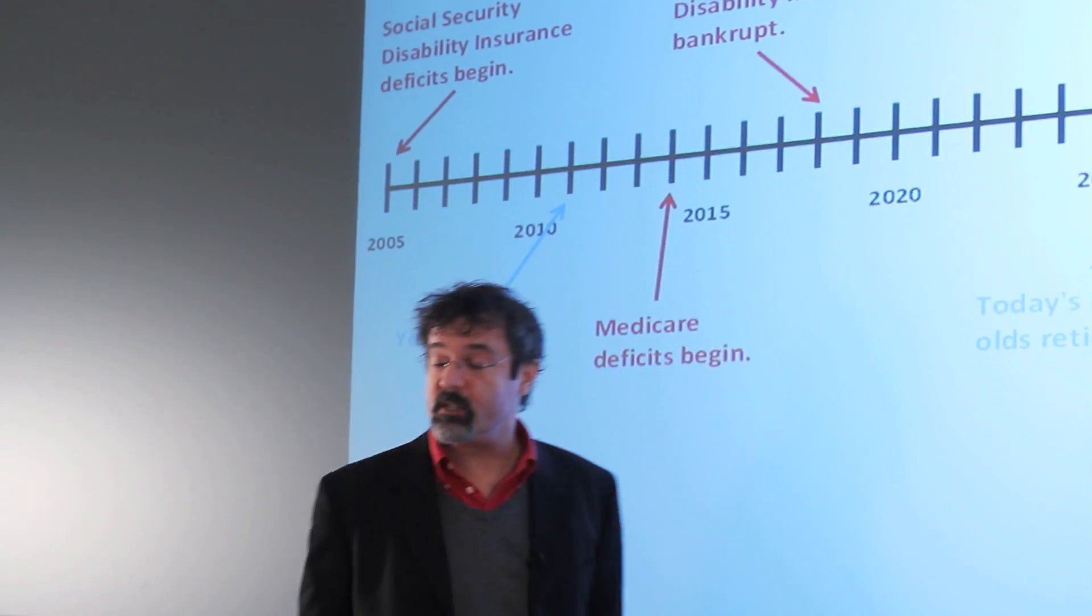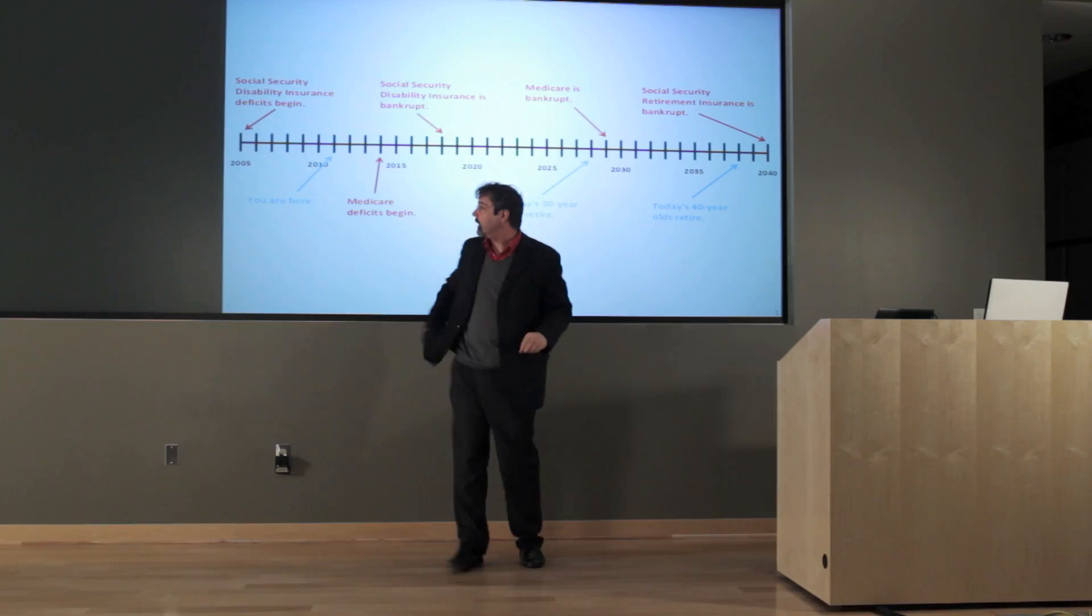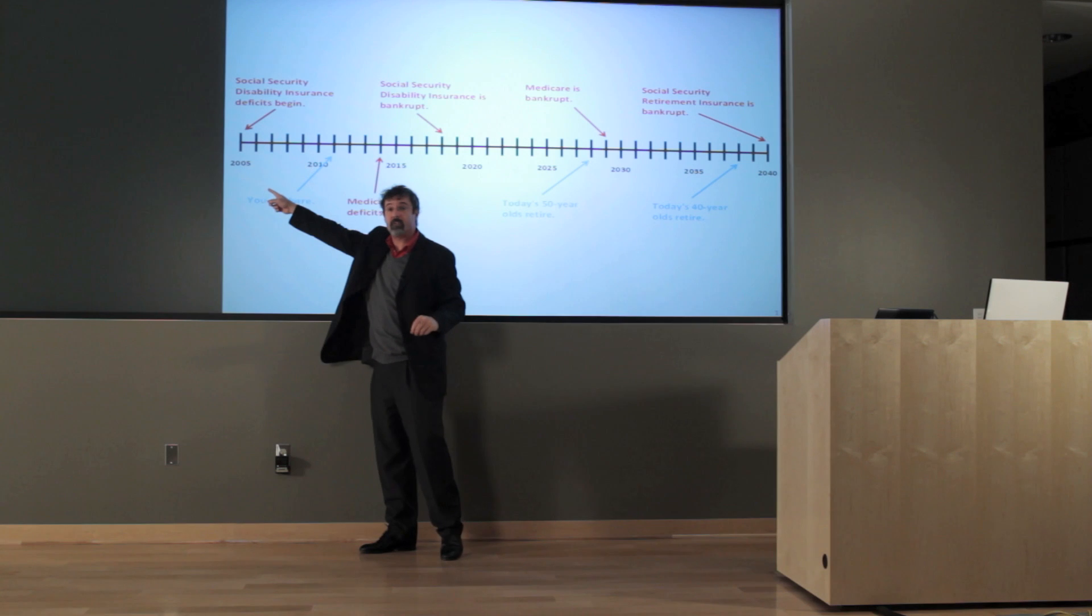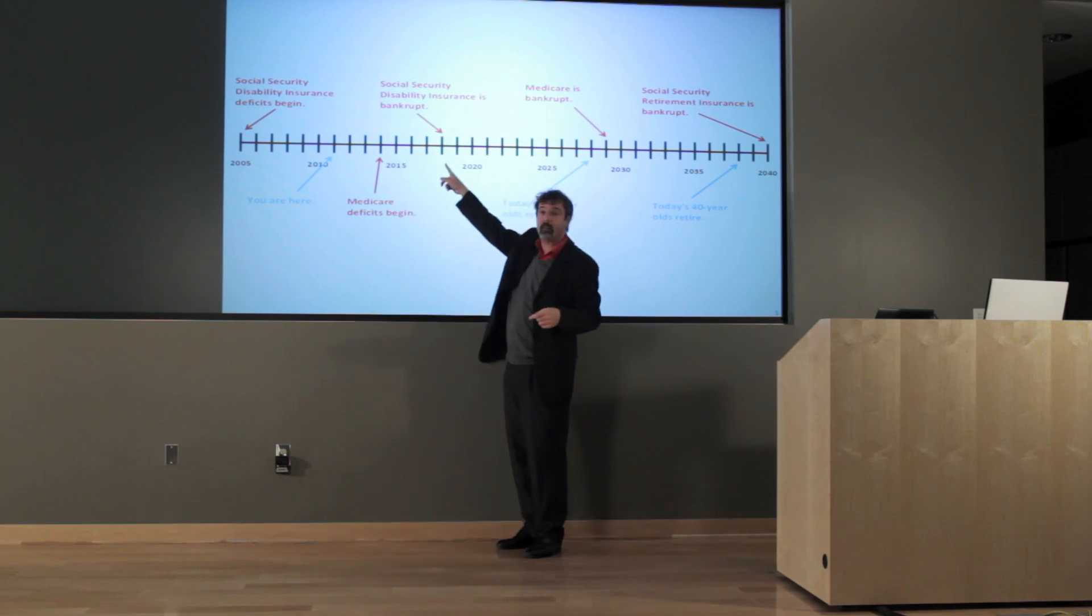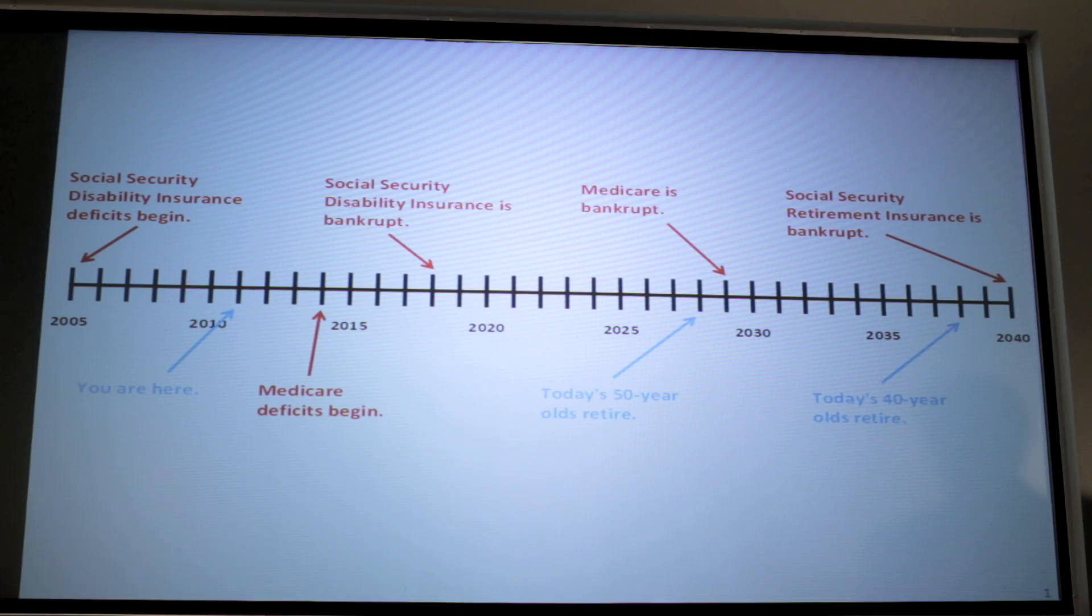2018, Social Security disability insurance has now gone bankrupt. These deficits that started back here in 2005 have accumulated. Here the money has run out. Medicare is bankrupt in 2029. Social Security retirement is bankrupt in 2040.